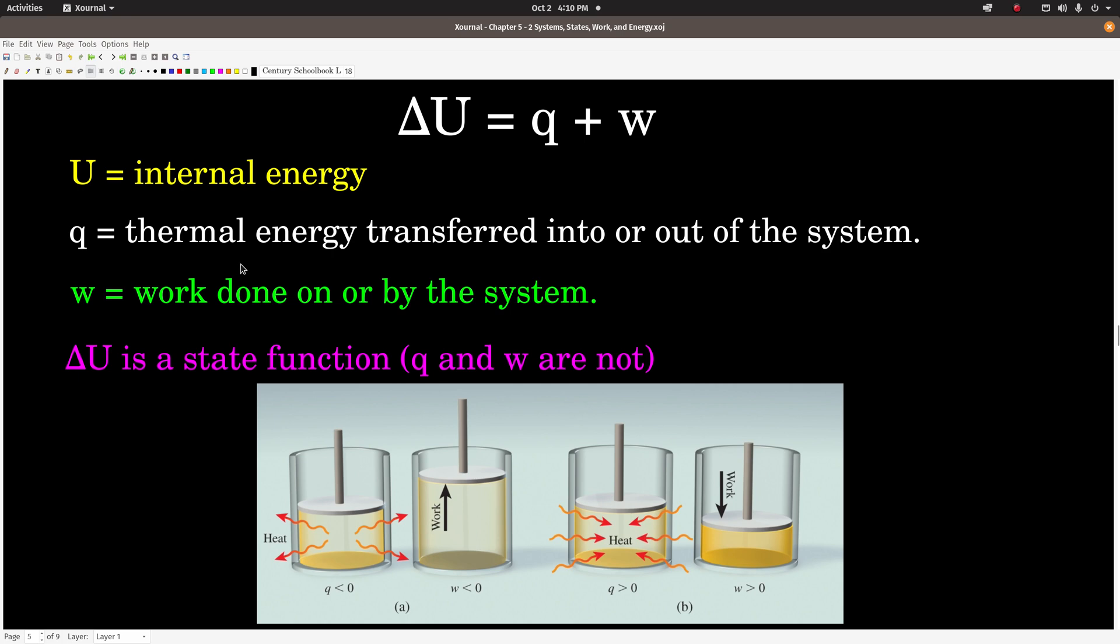This says delta U of a system is equal to q plus w. q stands for the amount of thermal energy transferred into or out of the system. If thermal energy leaves the system, its net q is negative. If thermal energy goes into the system, q is positive. And w stands for the work done on or by the system. So if the work is done on the system, the system gains energy and w is positive. If work is done by the system, then the system loses energy and w is negative.